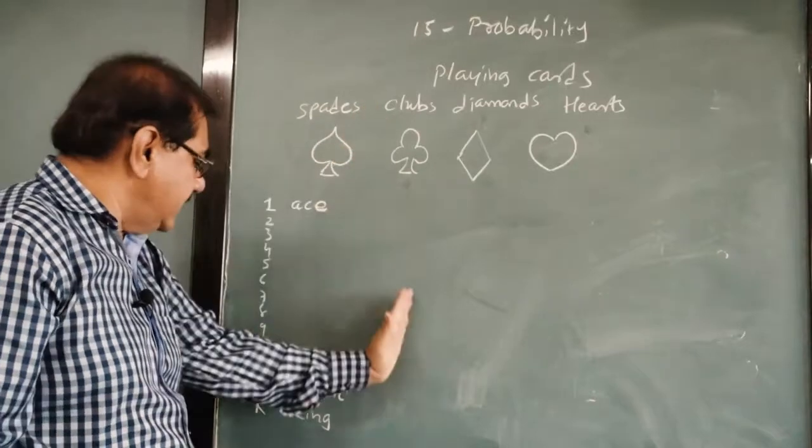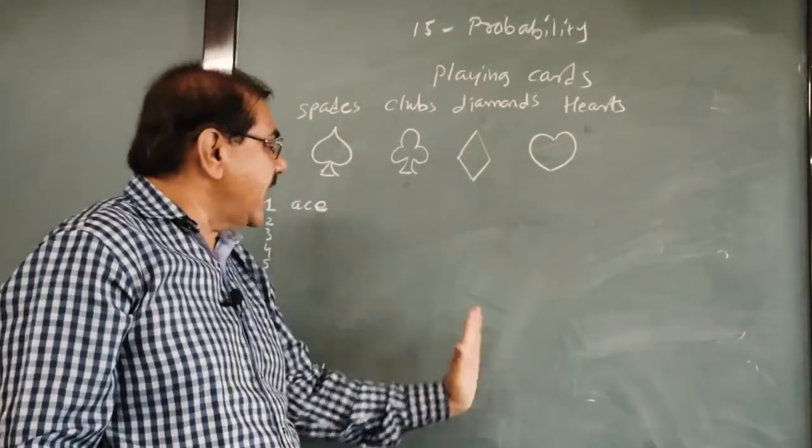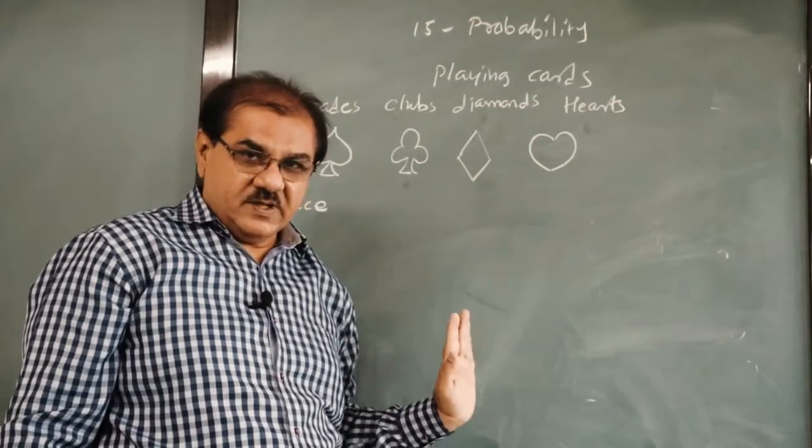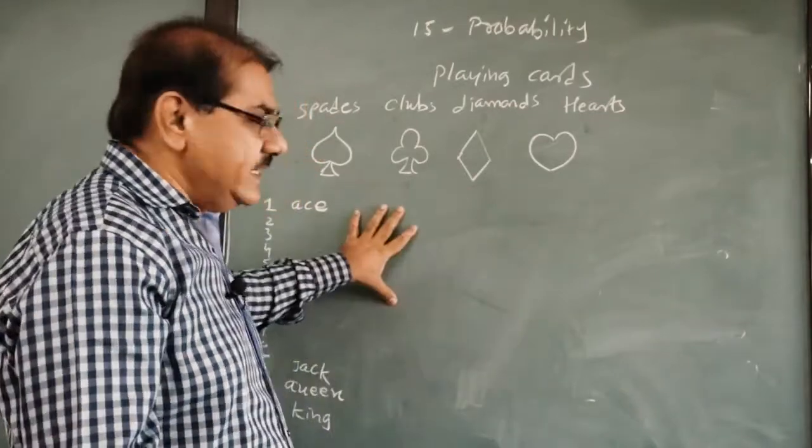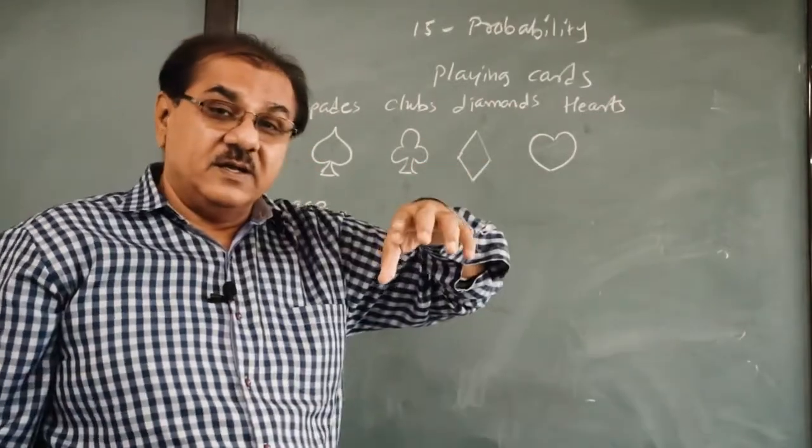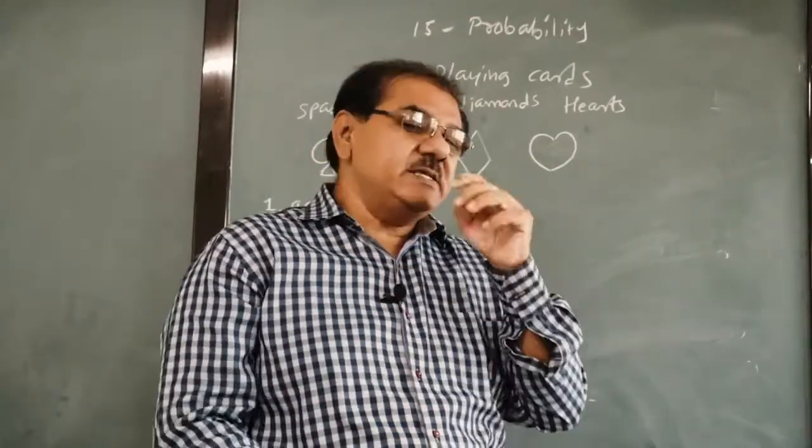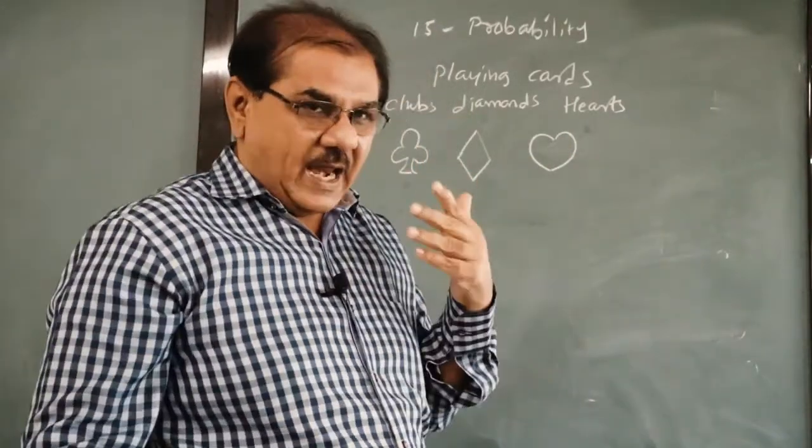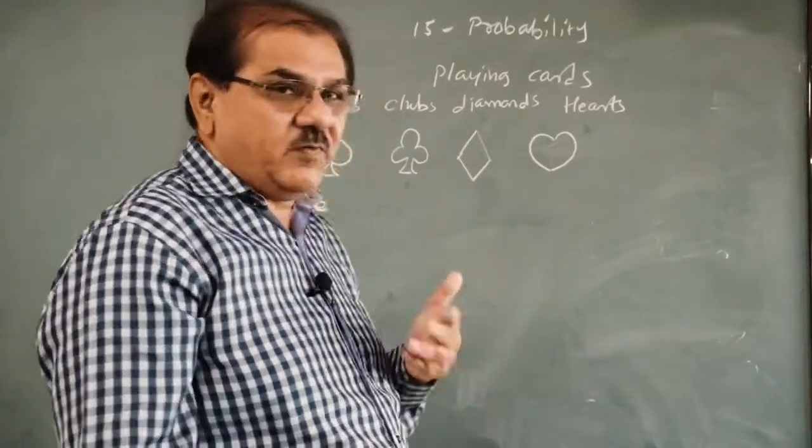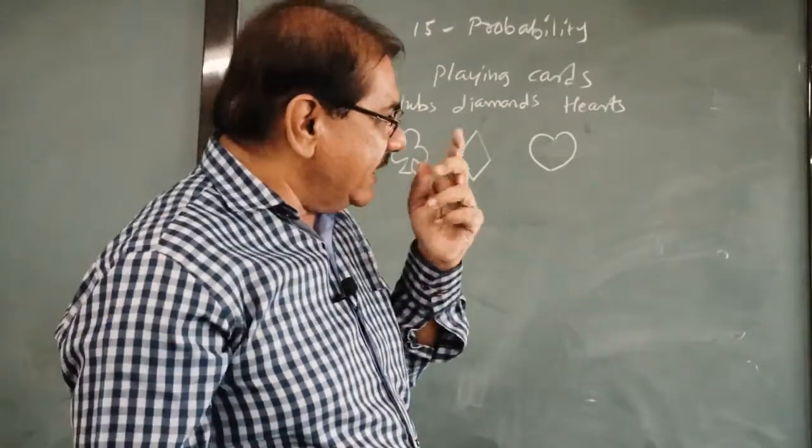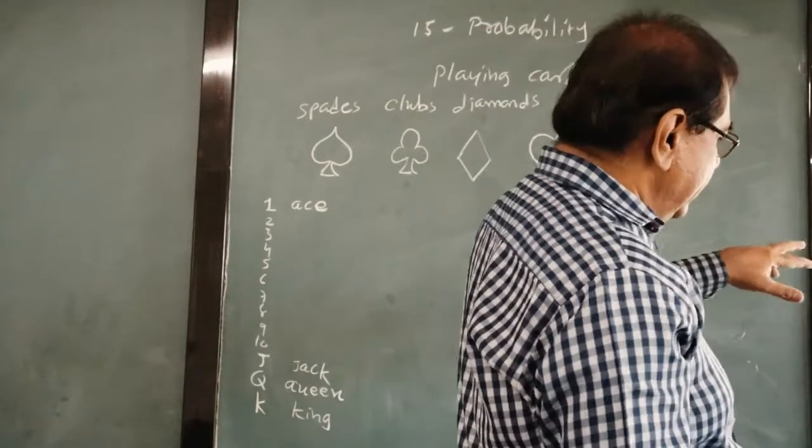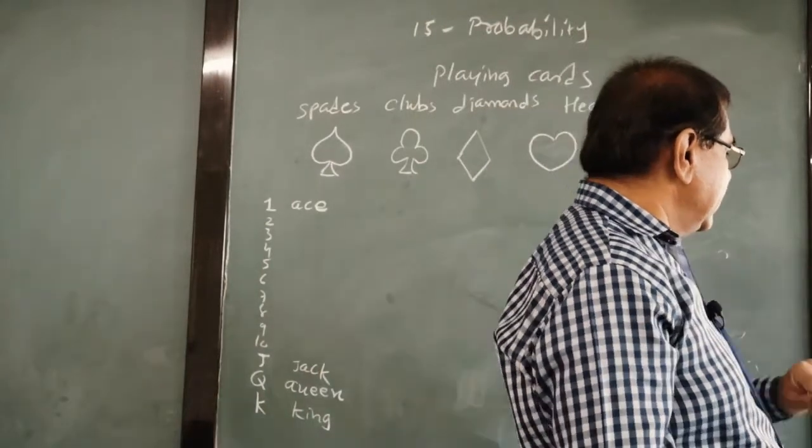In the same way, 13 pages in club, 13 in diamonds and 13 in hearts. Now in this game, we can attach probability. We can include probability in this game as well. Along with the playing cards, we can go for certain questions also.